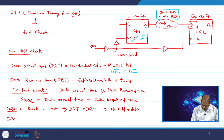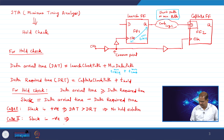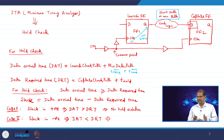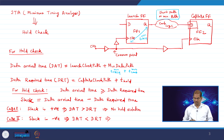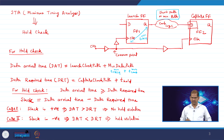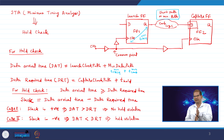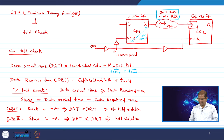For hold check, violations are checked within the same clock edge, whereas for setup violations you use two clock edges. A negative slack means data arrival time is less than data required time — hold violation exists.